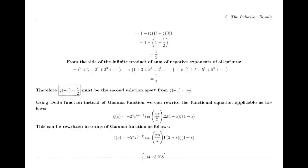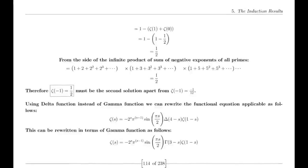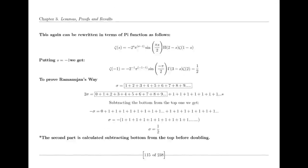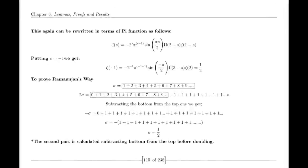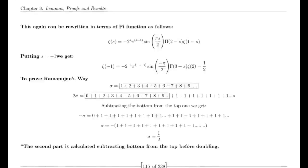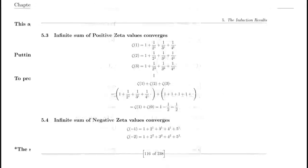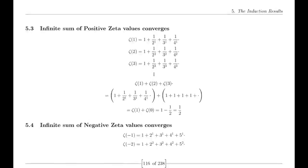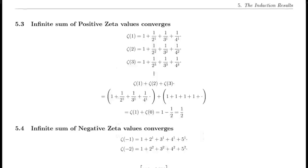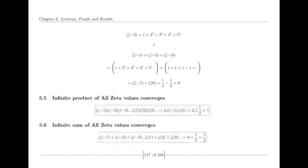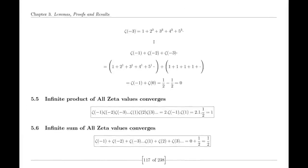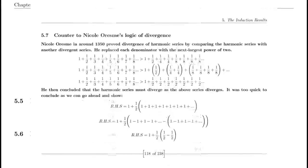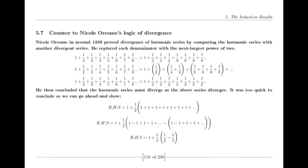The Antikythera mechanism was used to predict the timing of solar and lunar eclipses, the phases of the moon, and the timing of the Olympic games, reflecting the Greeks' deep understanding of celestial mechanics. The precision of this ancient device underscores the advanced level of astronomical and mathematical knowledge in ancient Greece, revealing a complex understanding of cycles and patterns — echoing the kinds of deep mathematical insights we still explore today, including those related to the Riemann hypothesis.